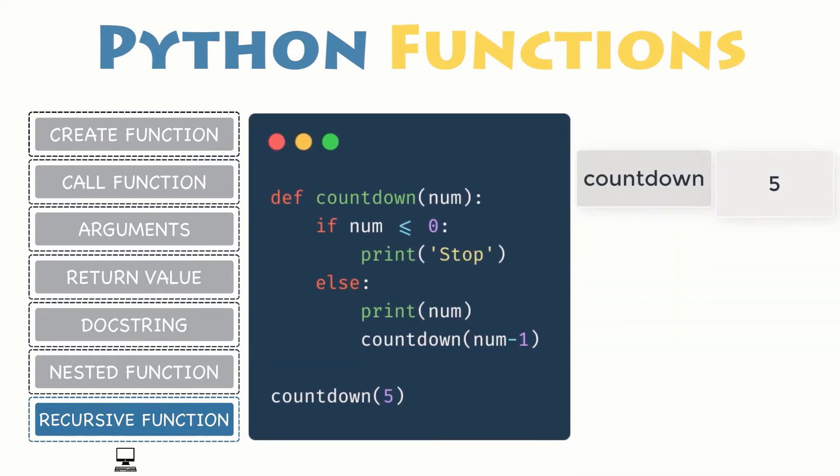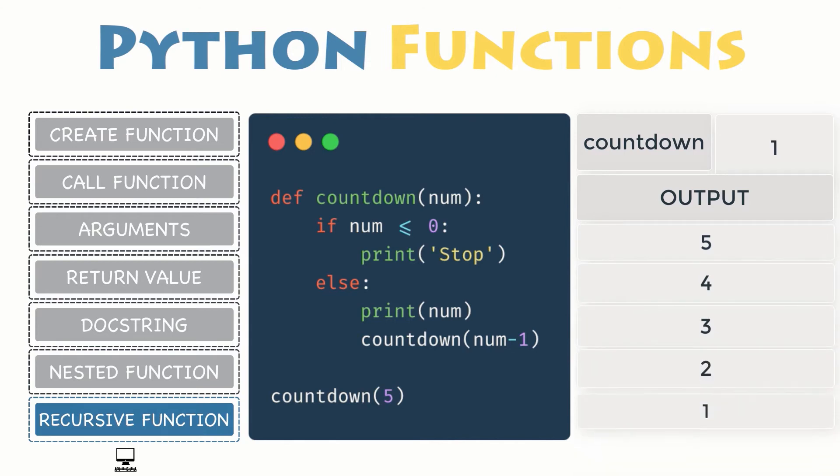In this example, countdown is a recursive function that calls itself recursively to countdown. If number is zero or negative, it prints the word stop, then automatically exits this function. Otherwise, it prints number and then calls itself again, passing number minus one as the new argument.